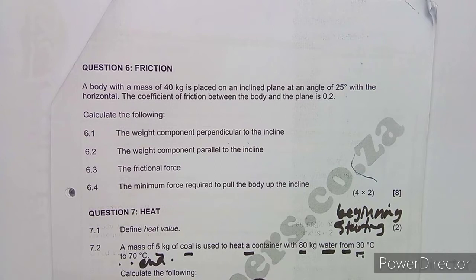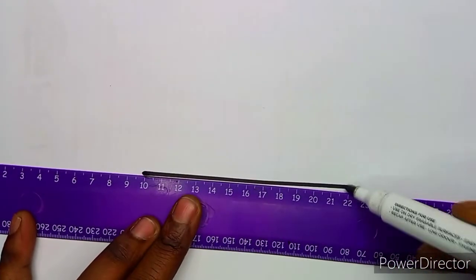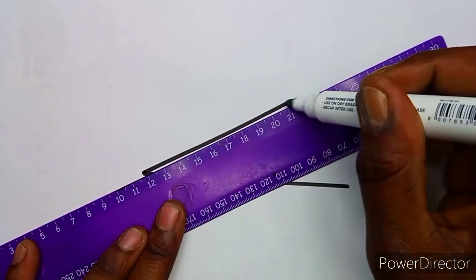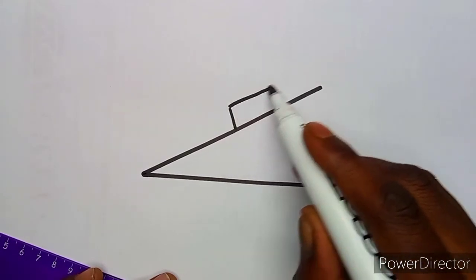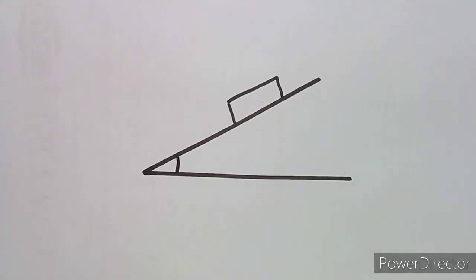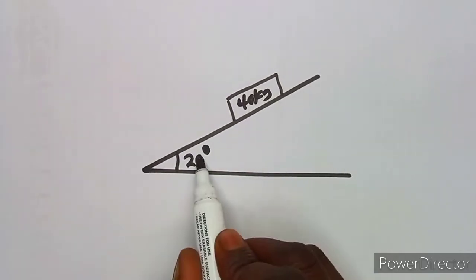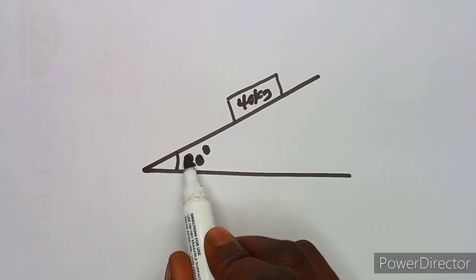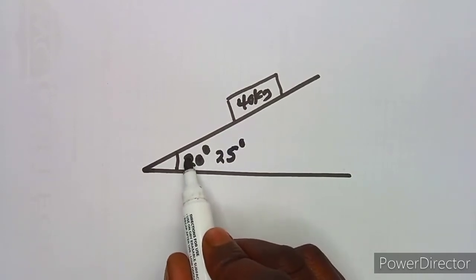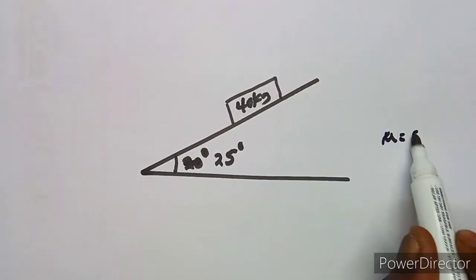We need to present a diagram of the board going up the incline. Let's draw a simple diagram — this is the body making an angle of 25 degrees with the incline, mass of 40 kg, and the coefficient of friction is 0.2.